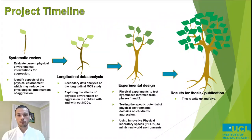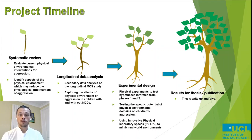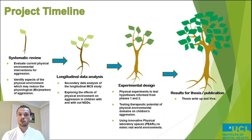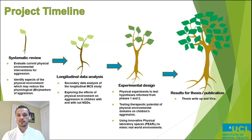This is a brief project overview. This project is split into three distinct phases. Phase one is a systematic review to evaluate the current literature on physical environmental interventions and their effect and association on aggression in children. We'll also be looking at biological and physical proxies of aggression and arousal such as blood pressure, heart rate, and skin conductance.